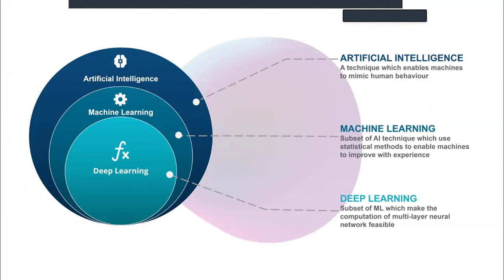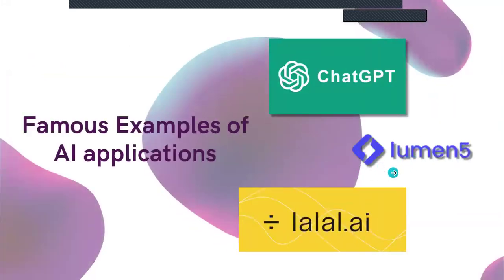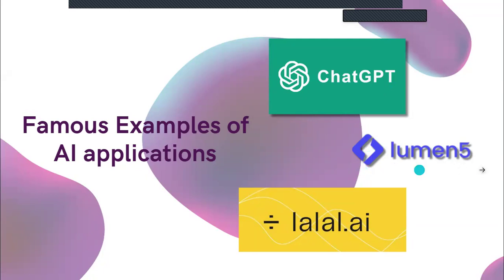ChatGPT is built with a neural network architecture called the Transformer. Famous examples of applications: ChatGPT — the most popular — for text generation and image generation. OpenAI will soon be releasing a model called Sora for video generation. Then Lumen5 for video and image generation. Then Lalao.ai — if you have a song and pass it to Lalao.ai, it uses AI technology to extract the drums, keyboard, guitar, and vocals individually.